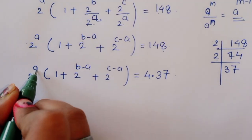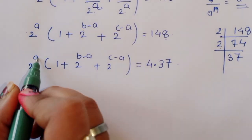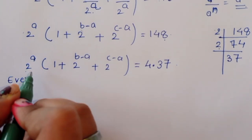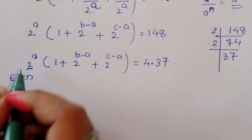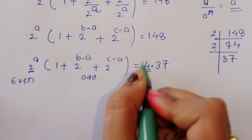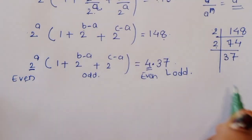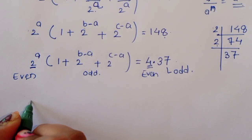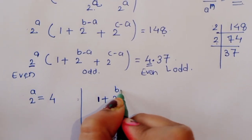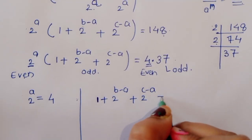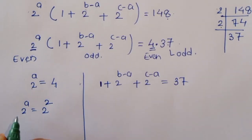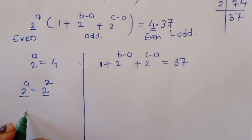Now, whatever value we put for A, 2 power A is always an even number. On the right side, 4 is even and 37 is odd. Comparing even and odd parts: 2 power A equals 4, and (1 plus 2 power B minus A plus 2 power C minus A) equals 37. Since 2 power A equals 4 equals 2 power 2, comparing bases gives A equals 2.